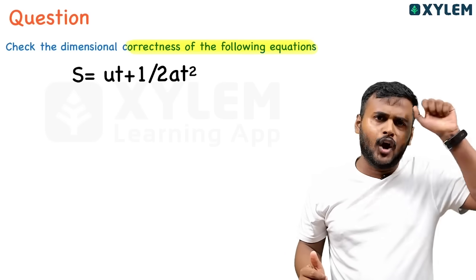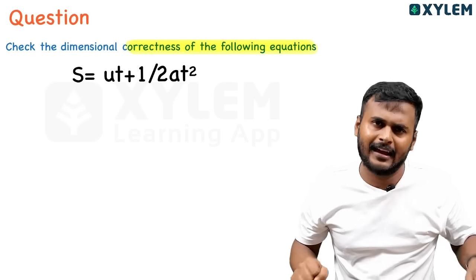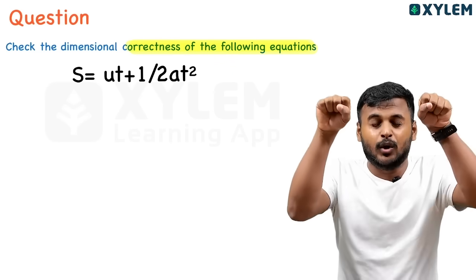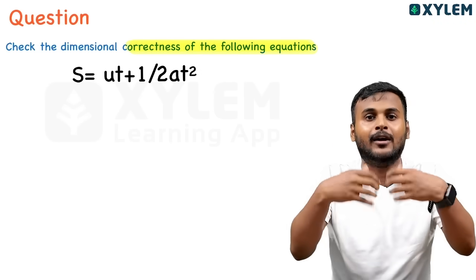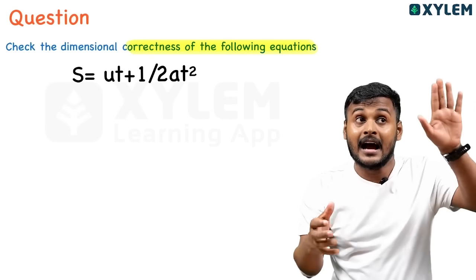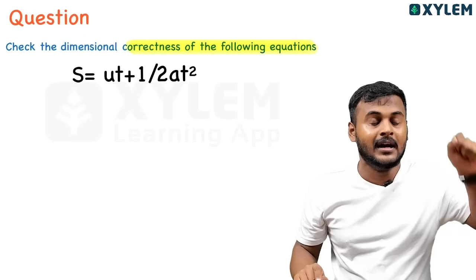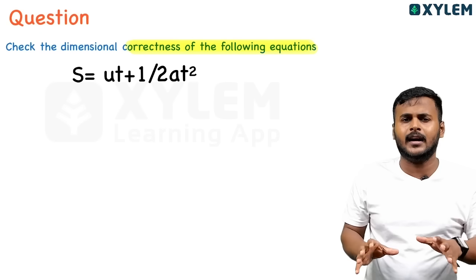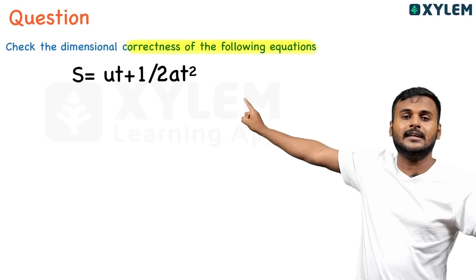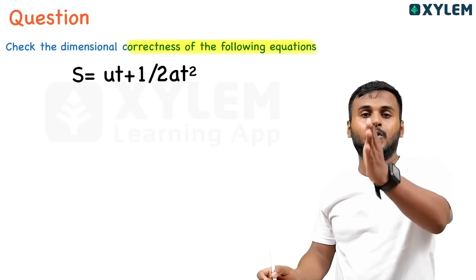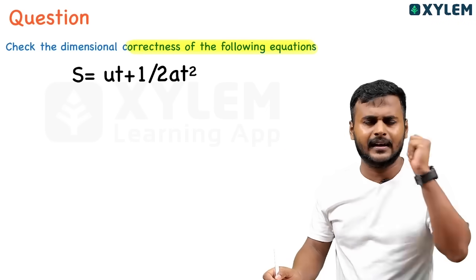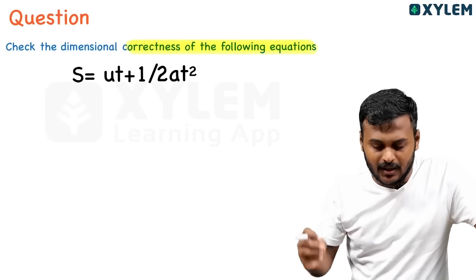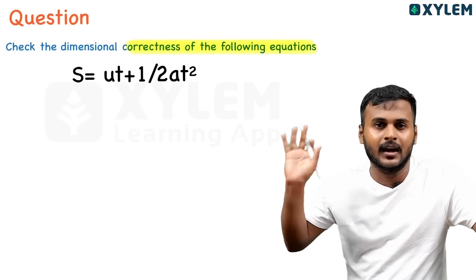Example: S = UT + ½AT². S is displacement, U is initial velocity, T is time, half is a constant, A is acceleration, and T squared is time squared. We verify: the dimension of UT gives L·T⁻¹·T = L, and ½AT² gives L·T⁻²·T² = L. So both terms give L, meaning L = L + L.